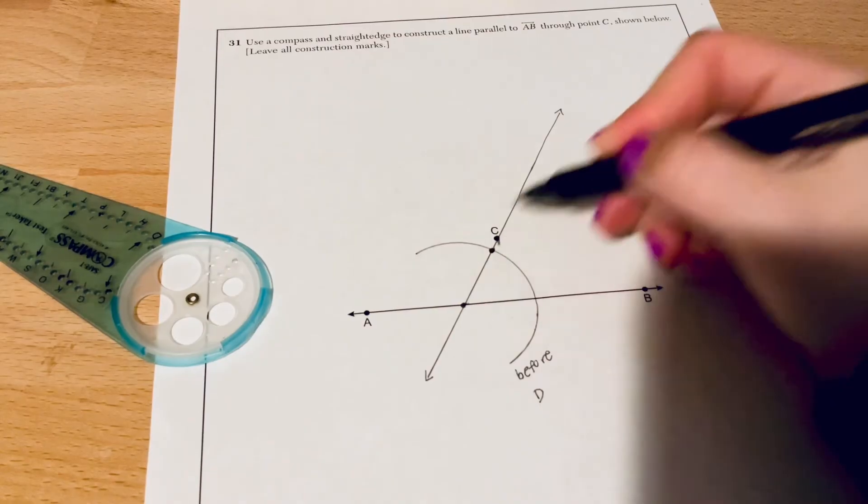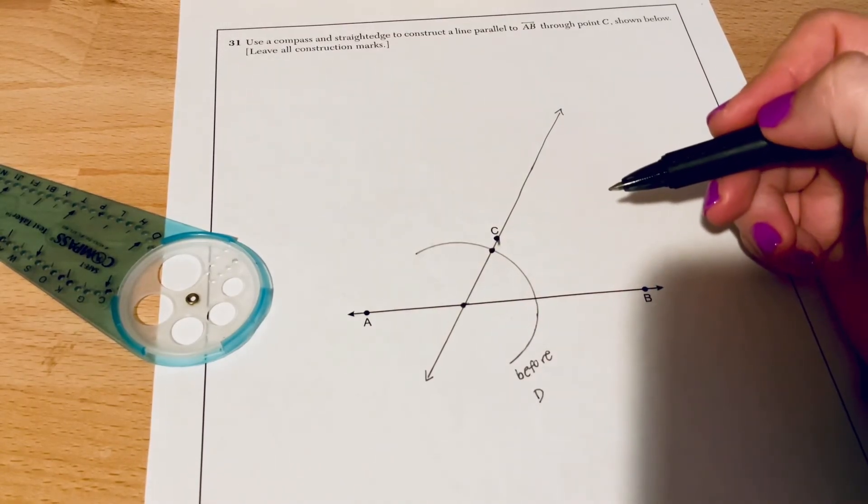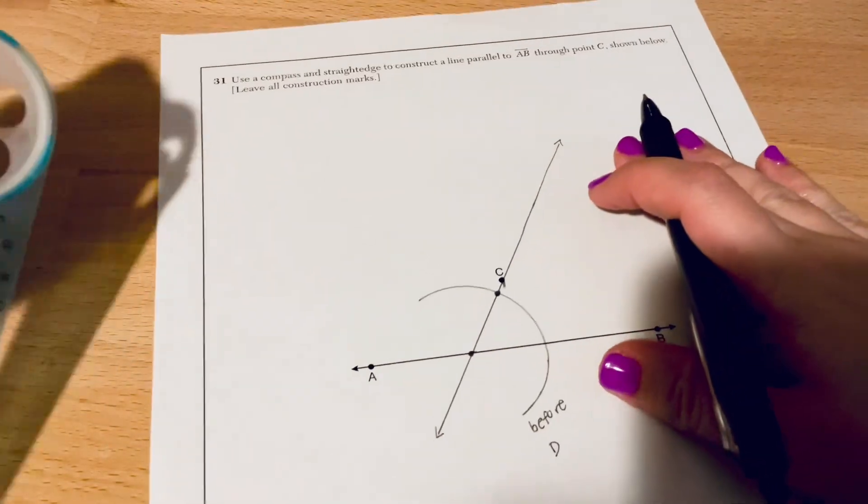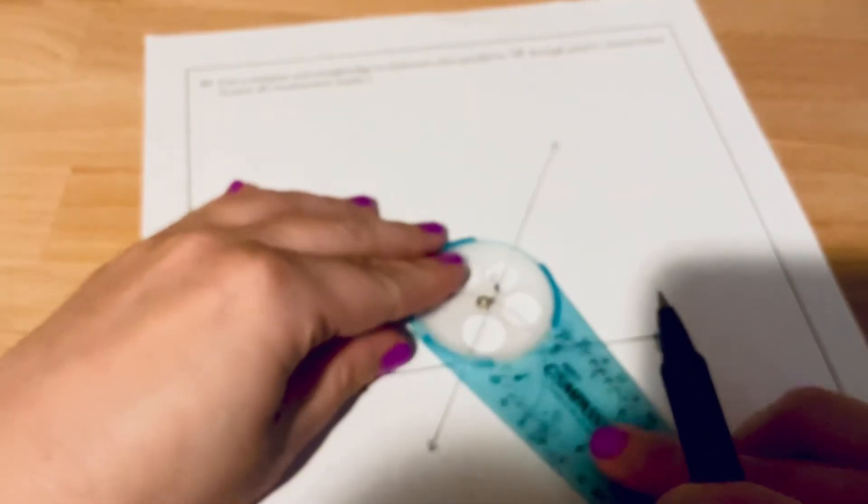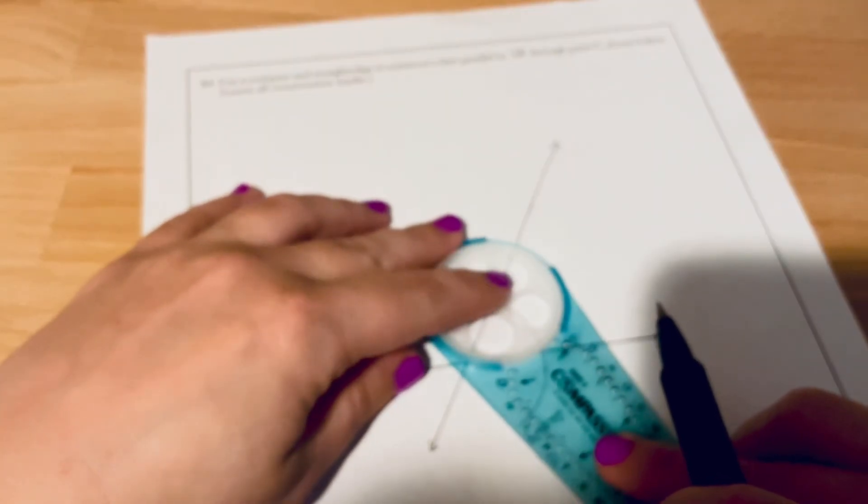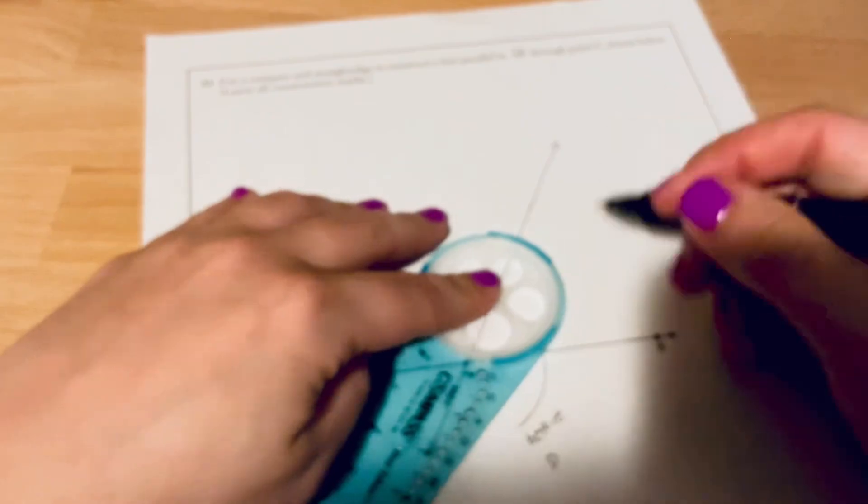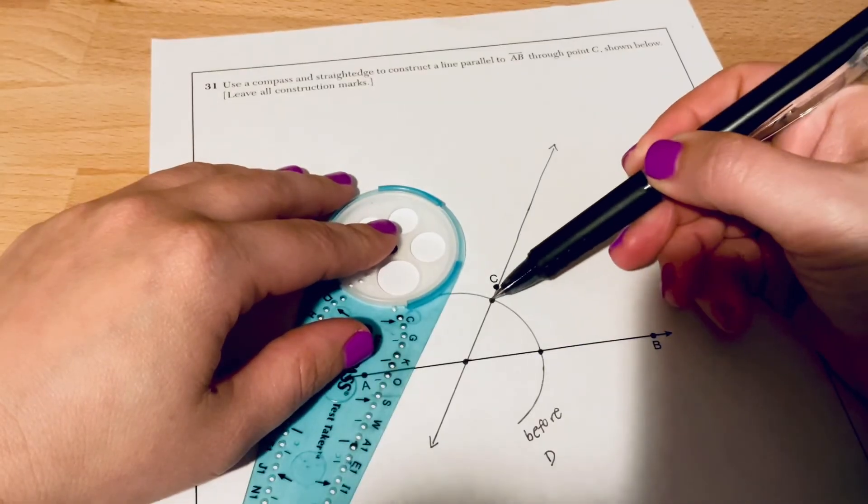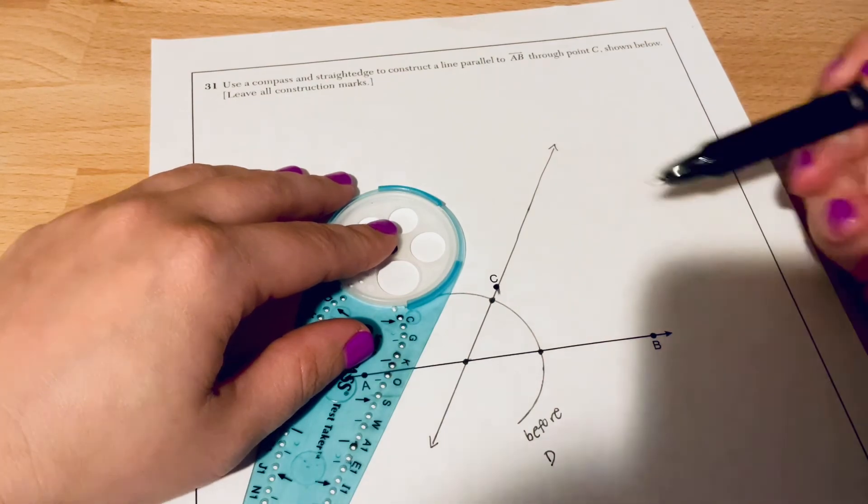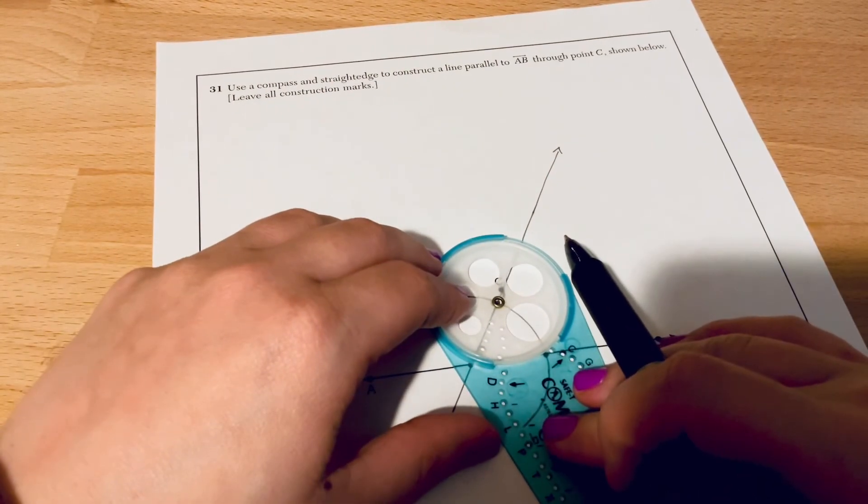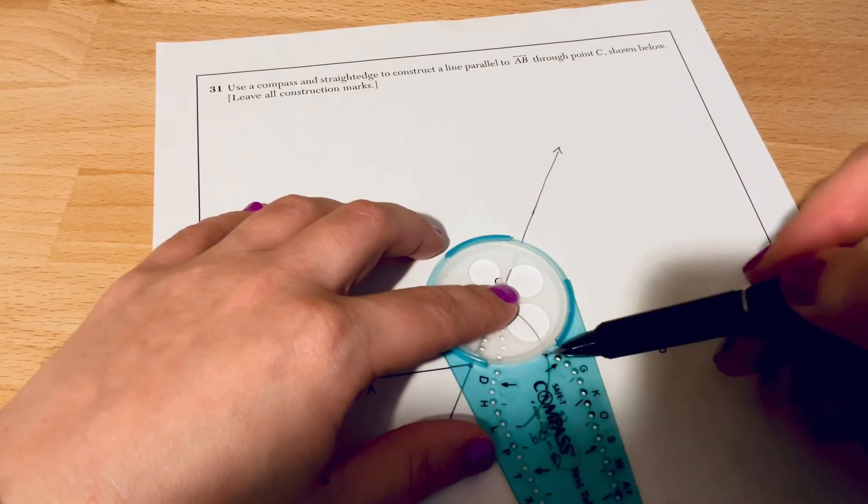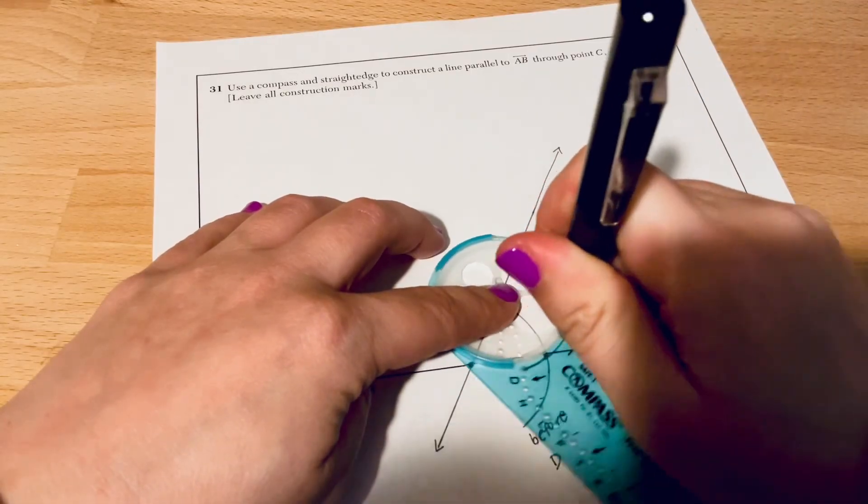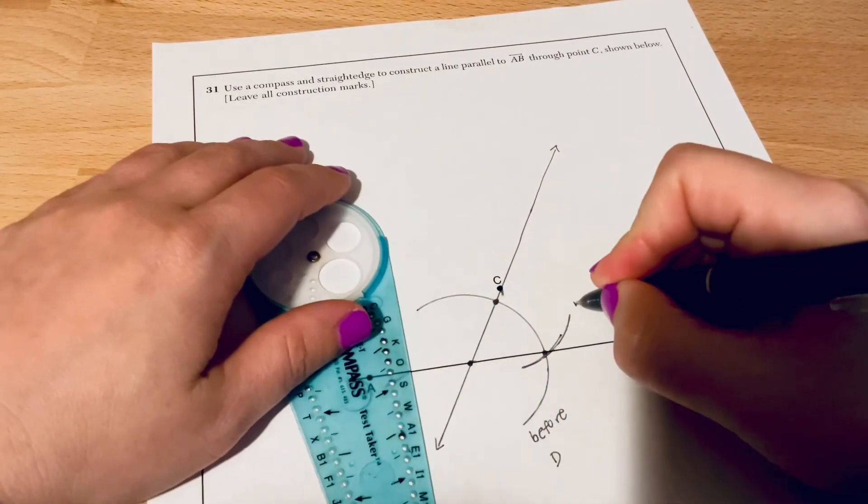Where that arc hit the transversal, I'm just going to bold that point. Ideally, if it's under the original point C, that's great. That makes this just a little cleaner. I'm going to put the gold piece of my compass on that point. And I want to find the hole in my compass that lines up with the other. Basically, what I'm doing is I'm measuring how far apart these two points are. So with the gold piece on one, this very first arc looks really good here. And I'm going to draw an arc through it.